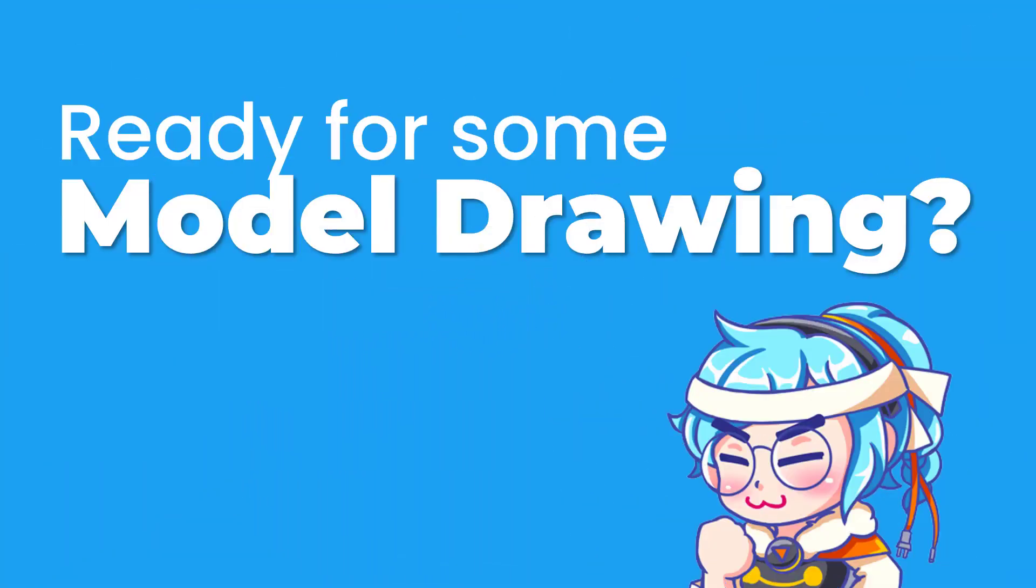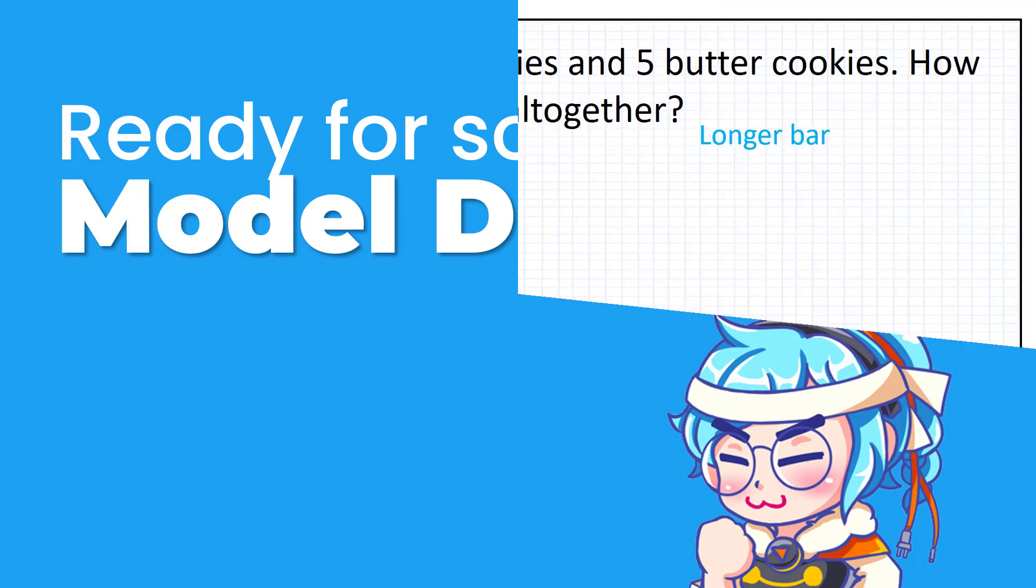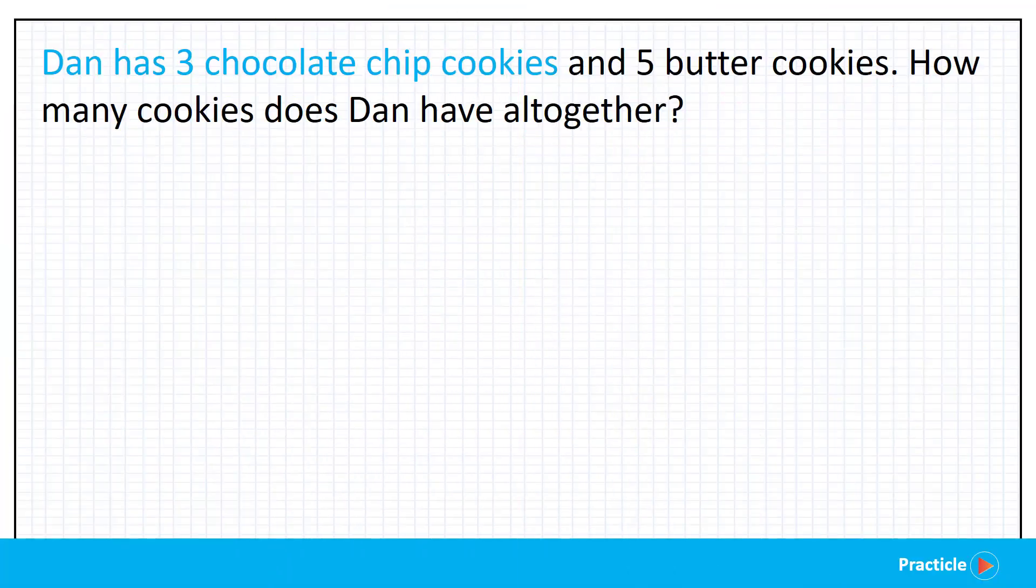Now are you ready with your pen and paper? Let's draw the model for this problem together. Dan has 3 chocolate chip cookies. So first, we are going to draw a rectangular box. You can start by drawing 2 straight lines that are equally long with your ruler, and then add in the sides after that. Good job!